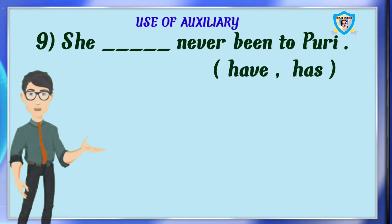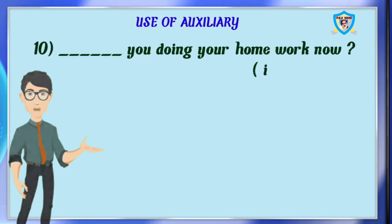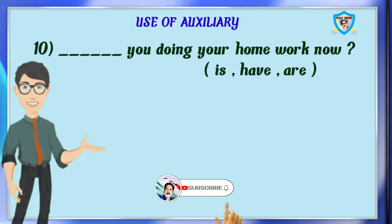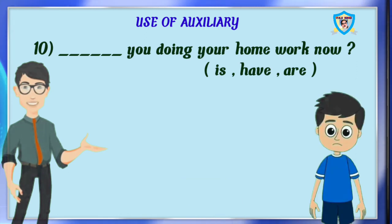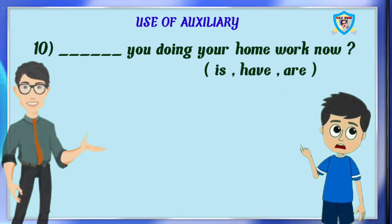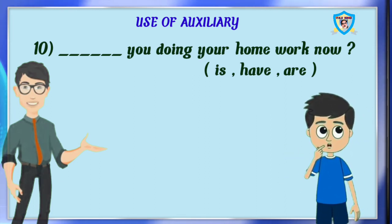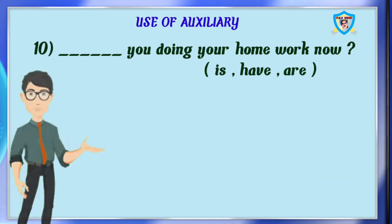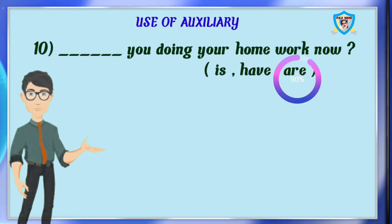Question 10: dash you doing your homework now? Options are is, have, are. Can you say the right answer? The answer is have. No, it is absolutely wrong. It is a present continuous and interrogative sentence — dash you doing your homework now? So we have to use: are you doing your homework now?